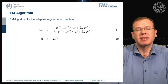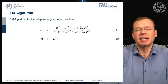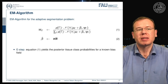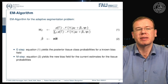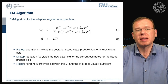Writing this as an EM algorithm: the E-step computes all weights w_{i,γ} — the posterior tissue class probabilities for the known bias field. The M-step then estimates a new bias field for the current estimates of the tissue probabilities. The result is generated by iterating between E and M steps five to ten times, which is typically sufficient.